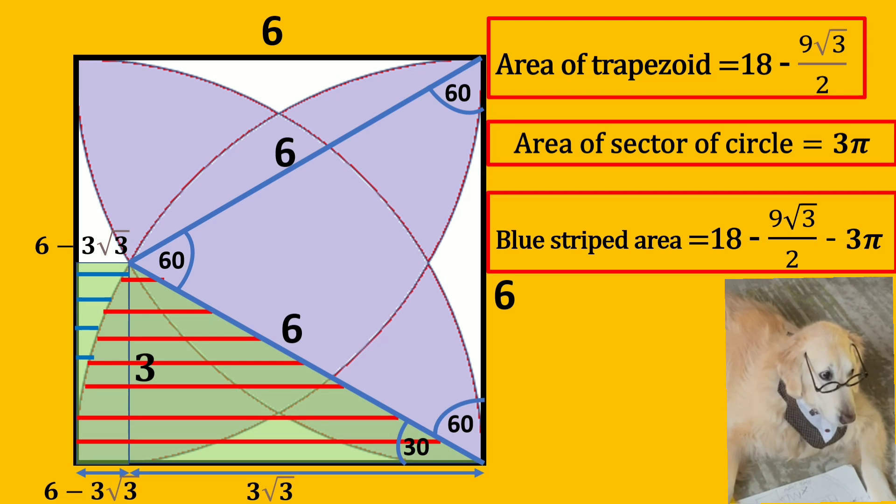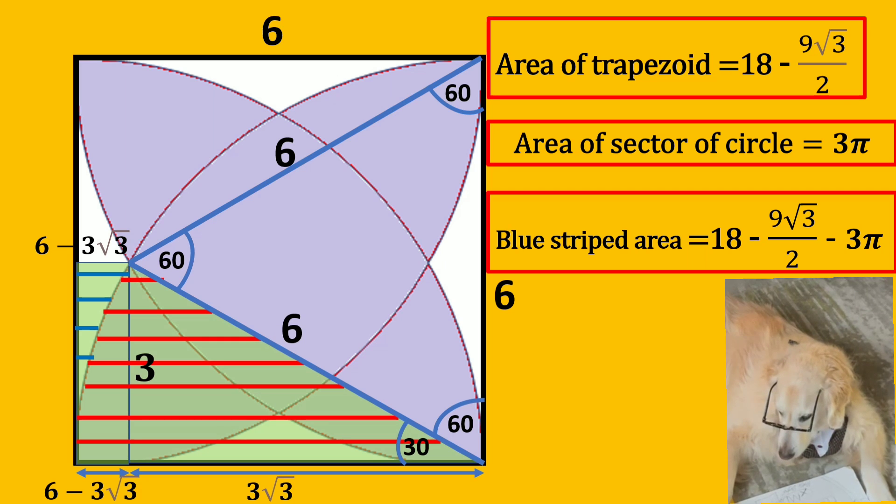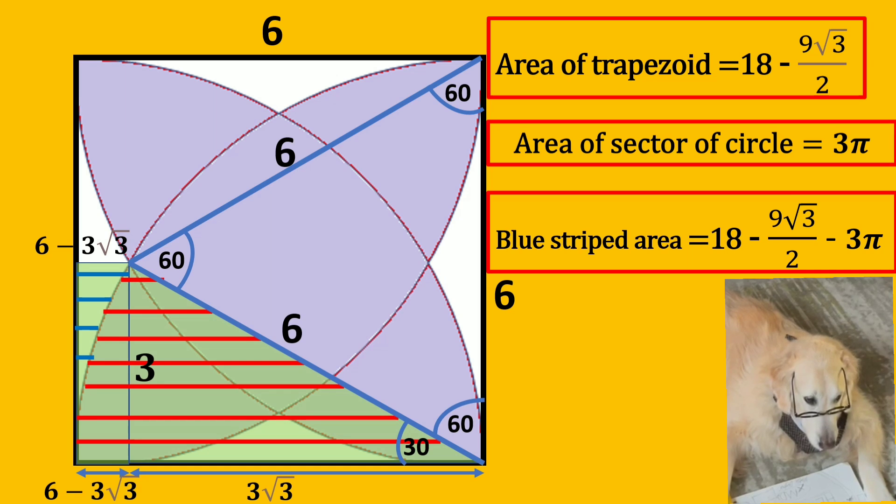Now we need to find the blue striped area. Blue striped area is equal to area of trapezoid minus area of sector of circle. So the blue striped area is 18 minus 9 times square root of 3 over 2 minus 3π.